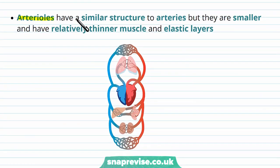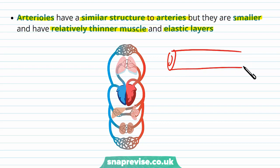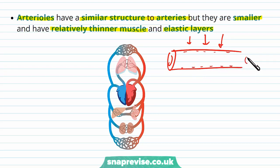Arterioles have the same general structure as arteries but are smaller and have a thinner muscle layer and a thinner elastic layer. This is because as blood travels down the vessels the pressure drops, as contact with the walls and friction slows it down. So arterioles don't need as much elastic or smooth muscle tissue because blood pressure is decreasing.